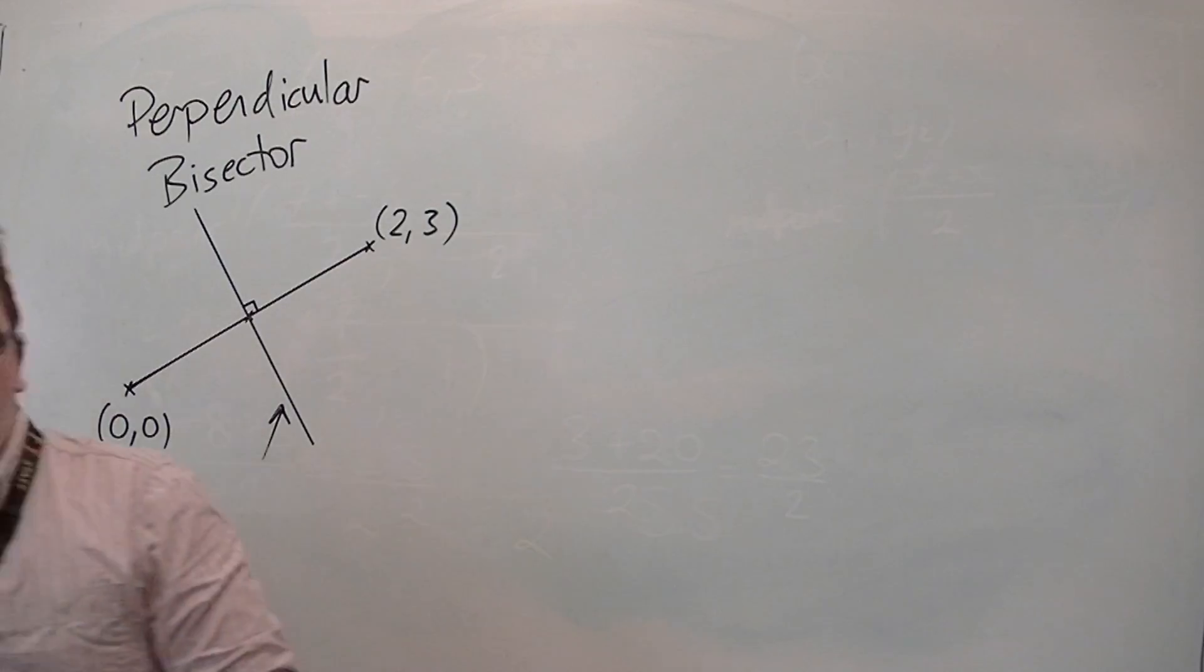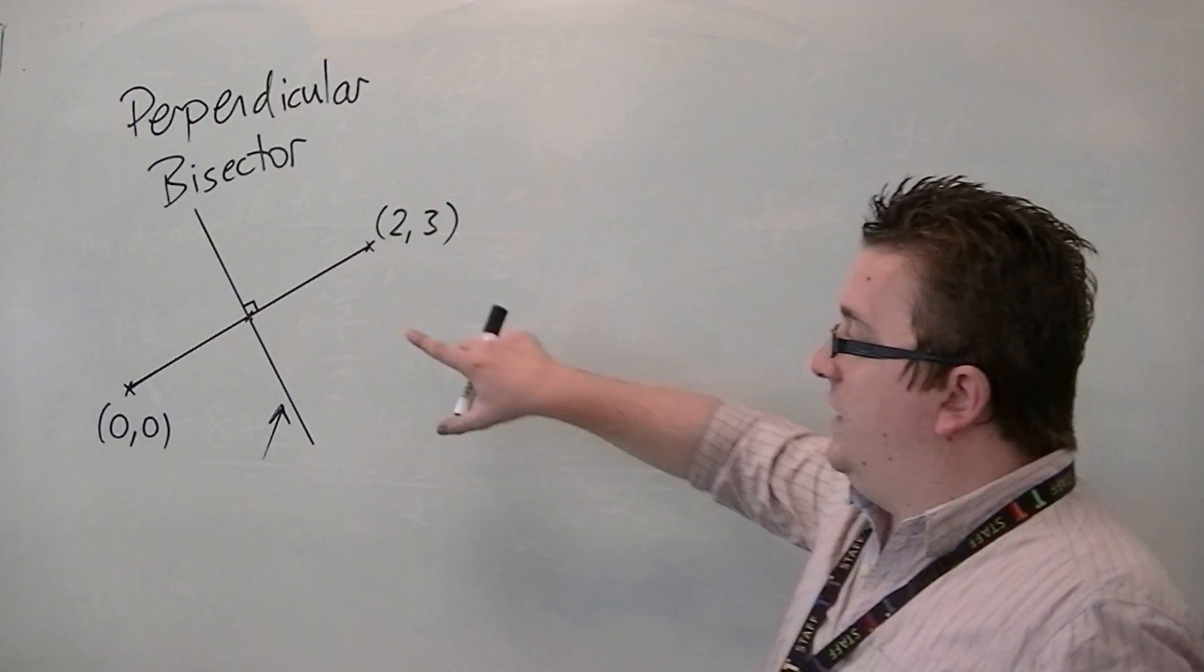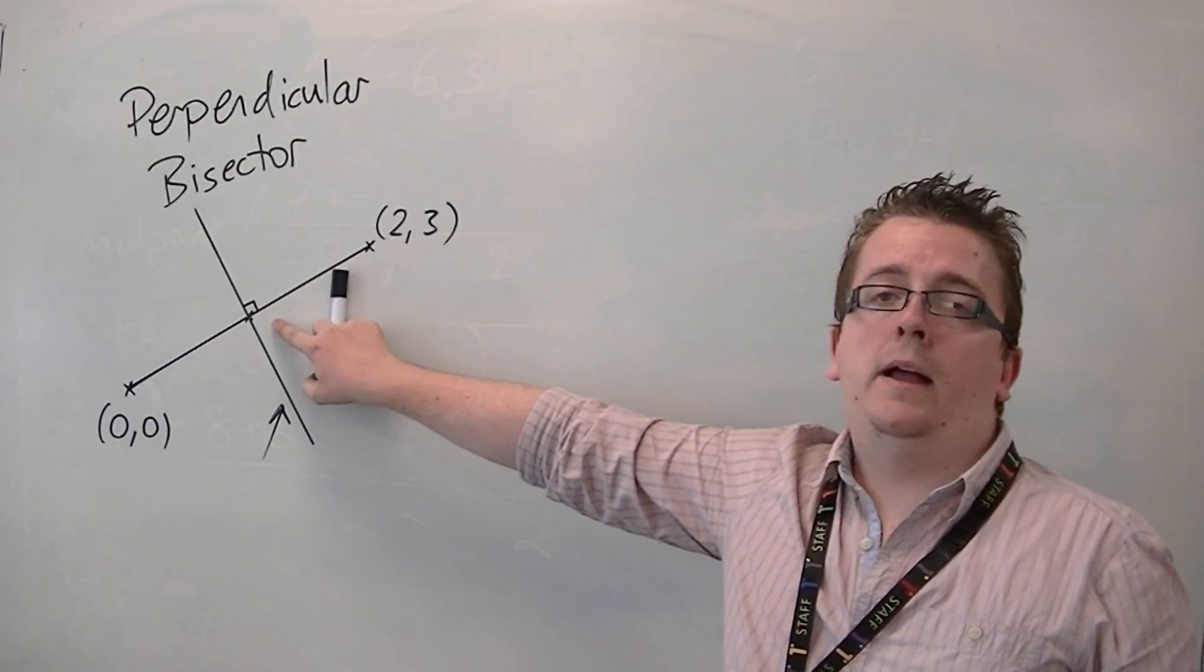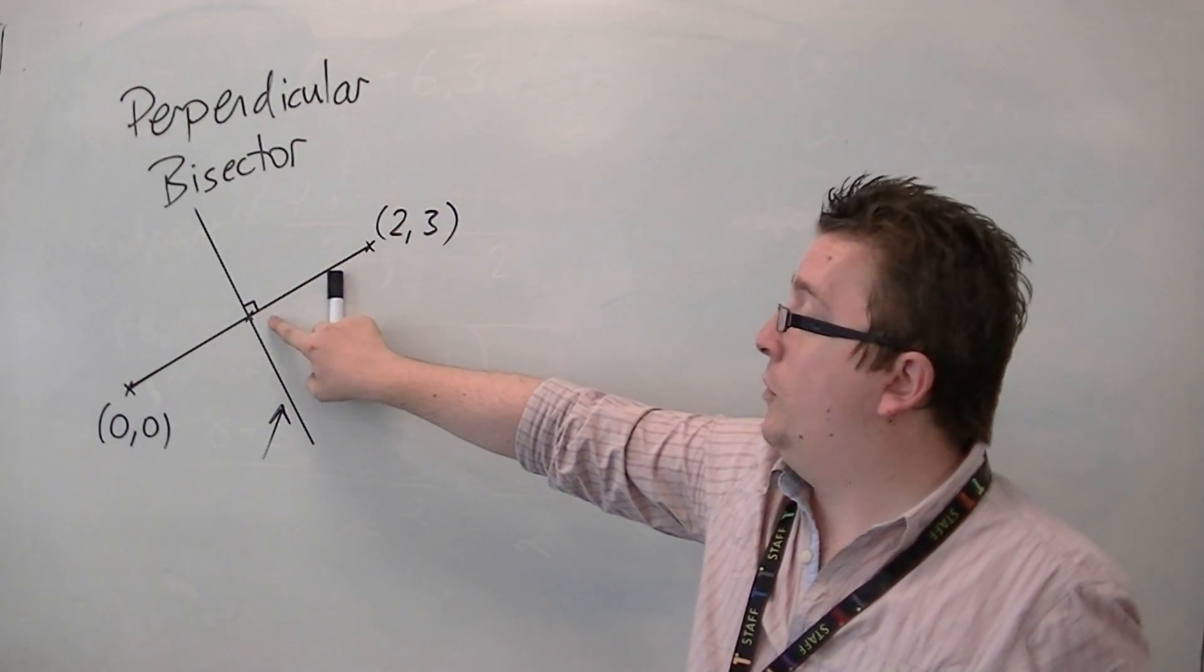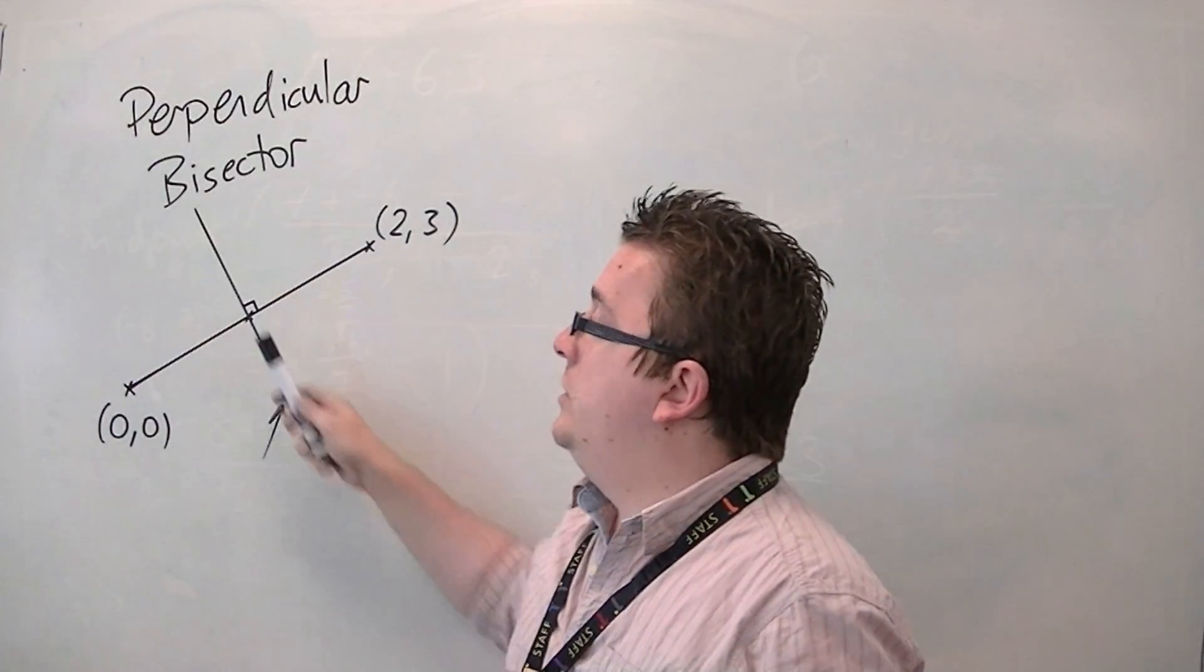There are things that I'm going to need to know in order to find that equation. I need to know this point to start off with. I need to know the midpoint. I also need to know the gradient of that line.